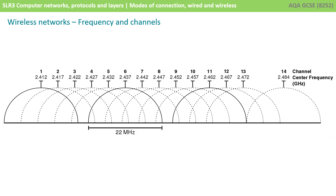We can see the full range of channels and frequencies used by Wi-Fi, though this is beyond exam requirements. All you need to know is that Wi-Fi operates on frequencies, and frequencies can belong to channels. As long as two devices are transmitting and receiving on the same frequency or channel, they can exchange data with one another.